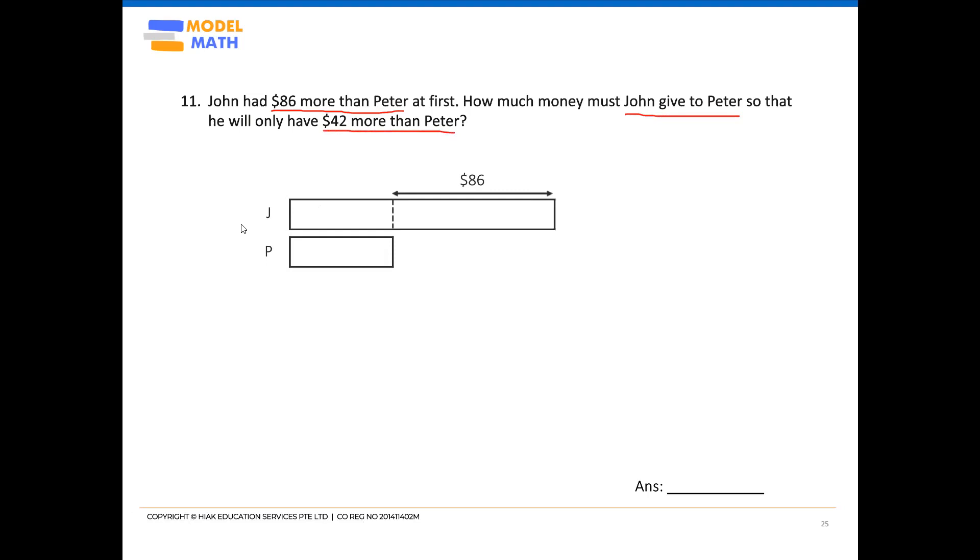So the next question you may be asking yourself is how much of John's model should I be cutting? So if I'm cutting this $86 block into half and I am actually cutting this half and transferring to Peter, you'll realize that they would then have the same amount of money.